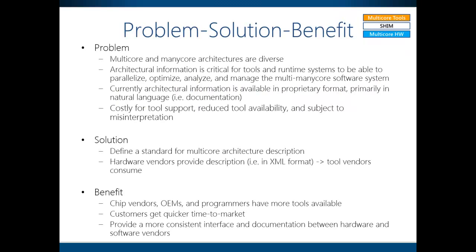The problem we have is that multi-core and many-core architectures are so diverse. Architectural information is critical for tools and runtime systems to be able to parallelize, optimize, analyze, and manage the multi-many-core software system. However, currently architectural information is available in proprietary format, primarily in natural language, such as the technical reference manual. This is quite costly for tool support, which results in reduced tool availability, and is even subject to misinterpretation.